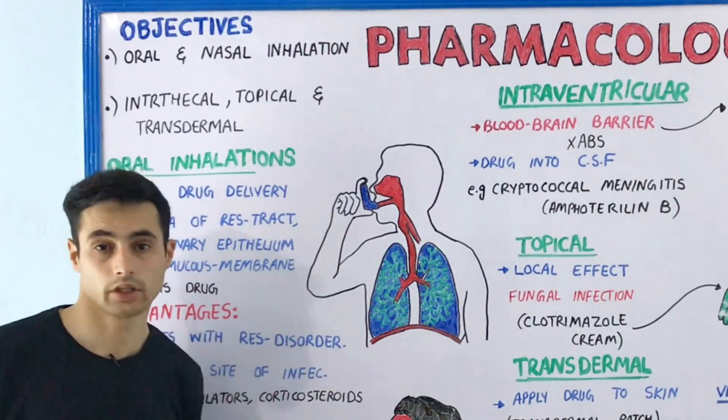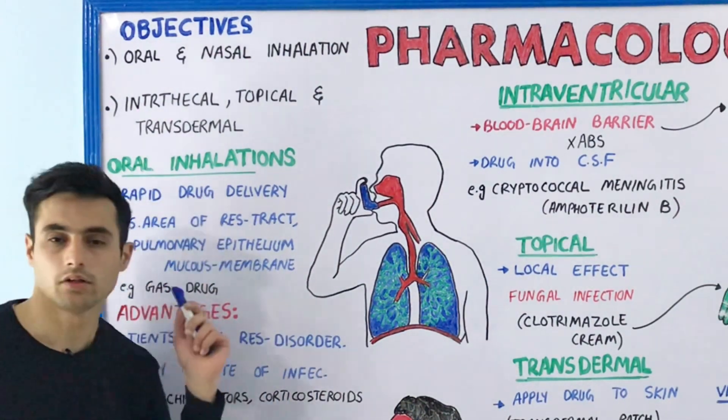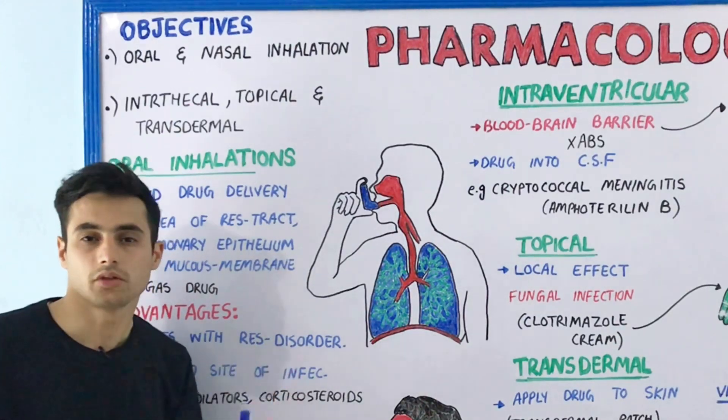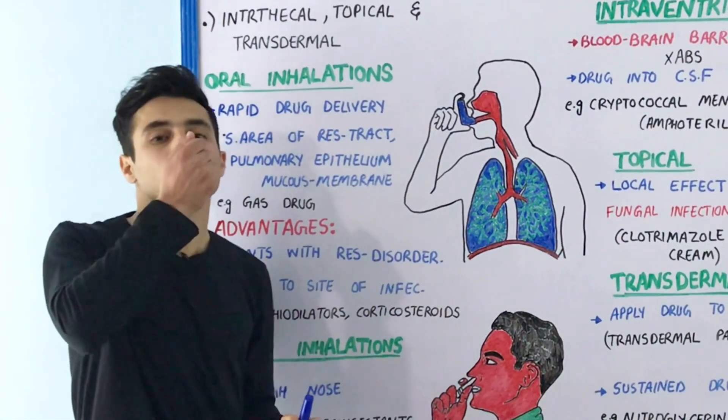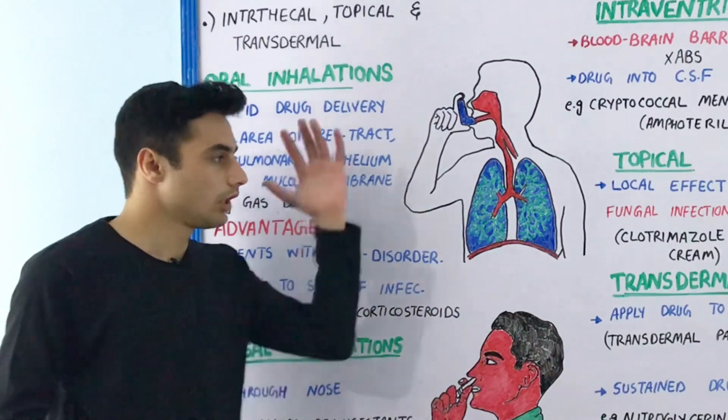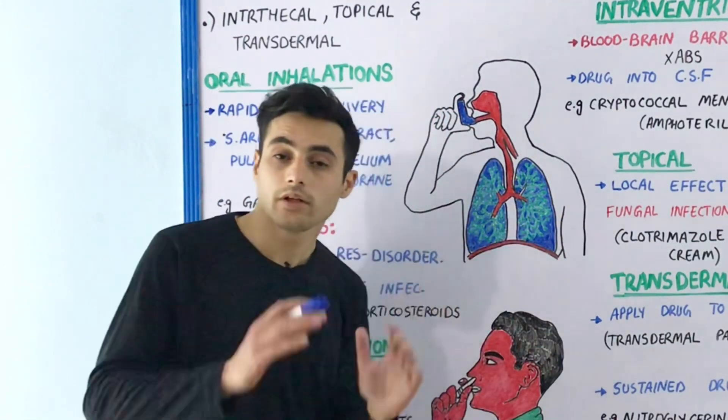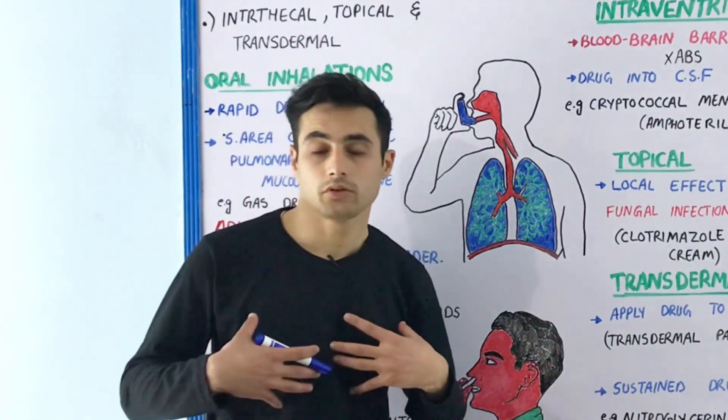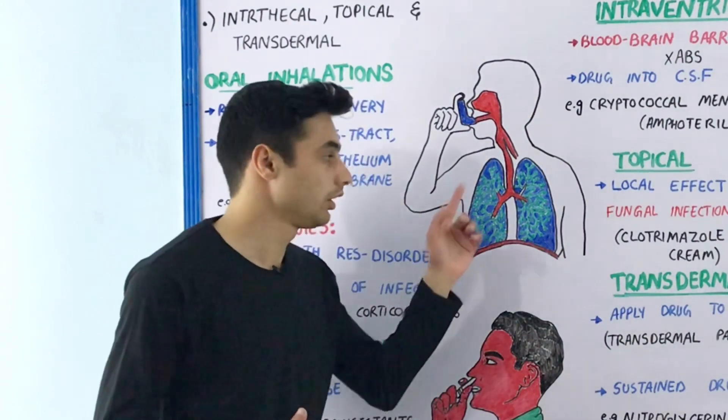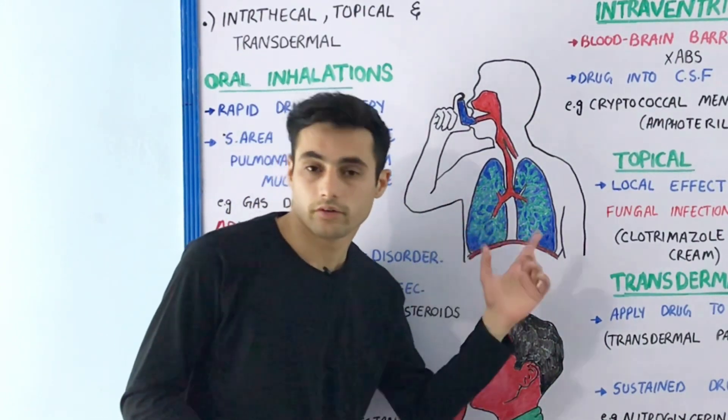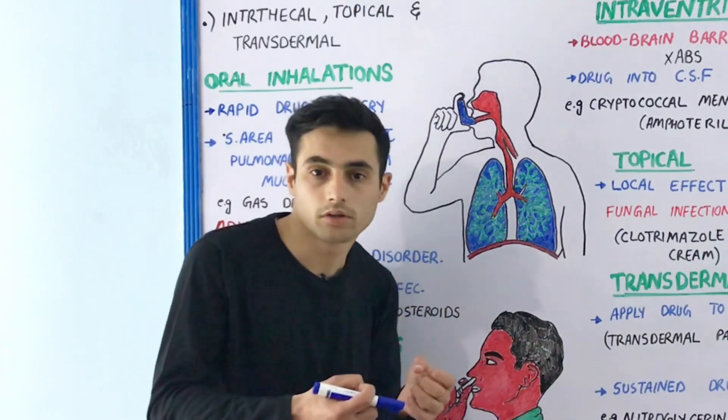Oral inhalation, as the name suggests, are drugs taken through the oral route. Have a look at this diagram - you might have seen asthma patients who cannot breathe because their airways are constricted and the air passages to the lungs are blocked.